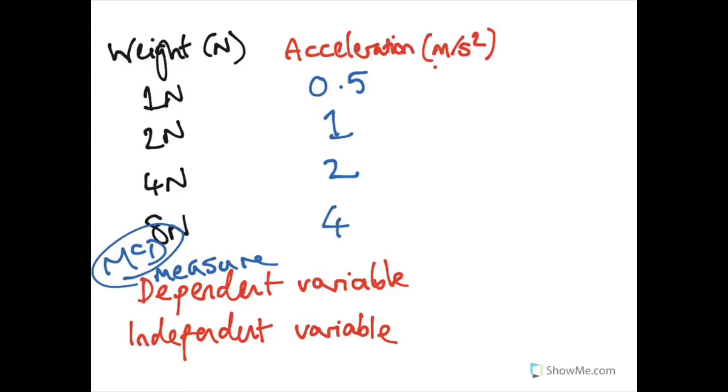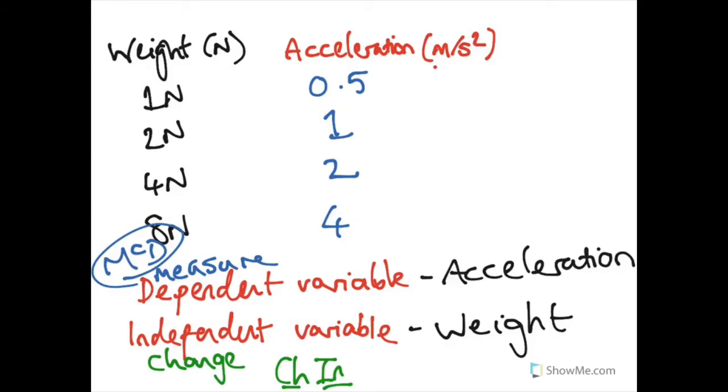The independent variable, you change the independent variable. If you remember the word chin, you change the independent, you measure the dependent. So the thing that we have changed each time, the thing that we have wanted to change each time, was the weight. We could control that. And as a result of that thing changing, we have measured an increase in acceleration. So we changed the weight and we measured a change in the acceleration.